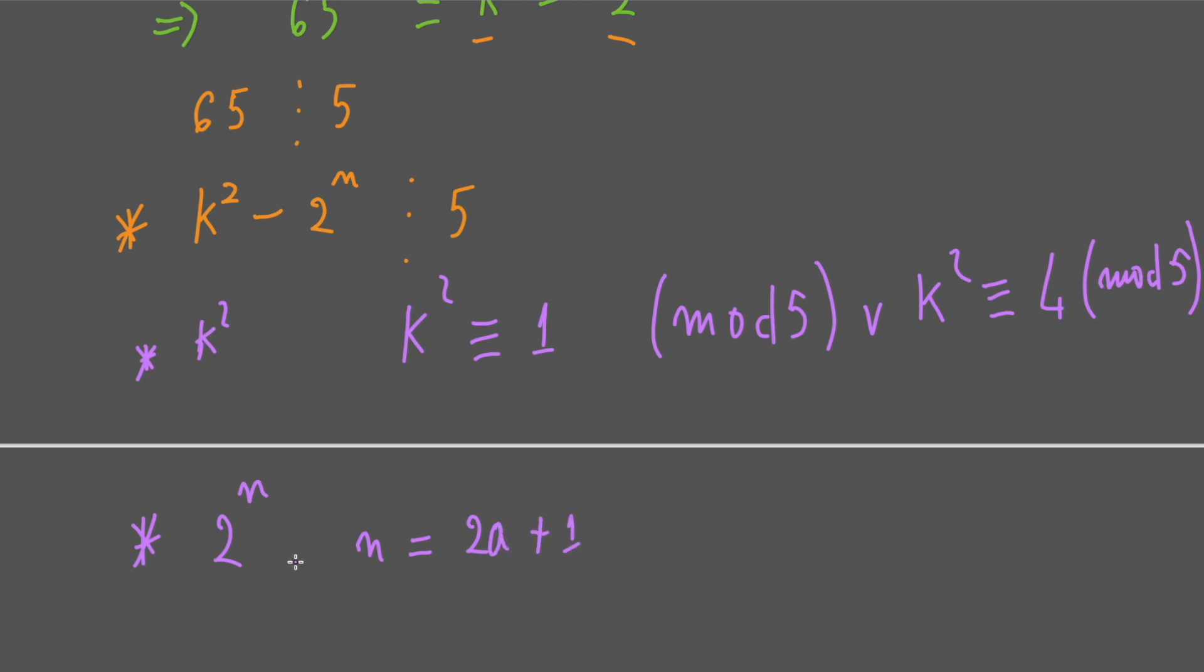If n is odd number, why we consider n is odd number in this case? Because if n is even number we can factorize this into a few factors. So we can consider that later in this video.